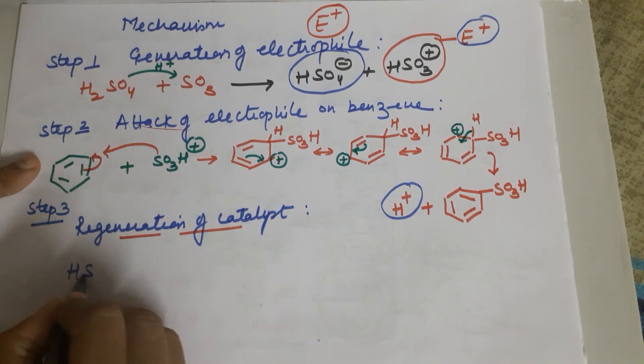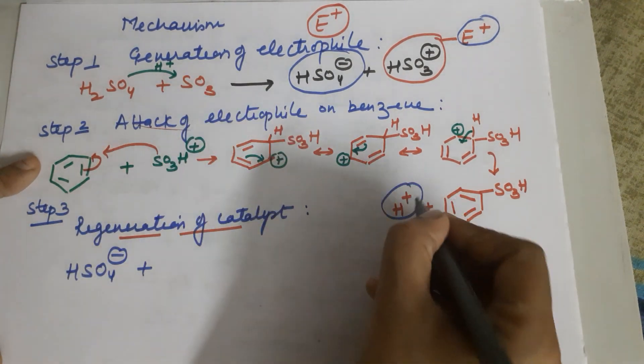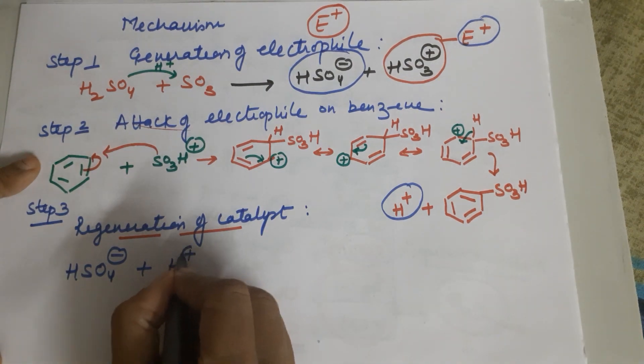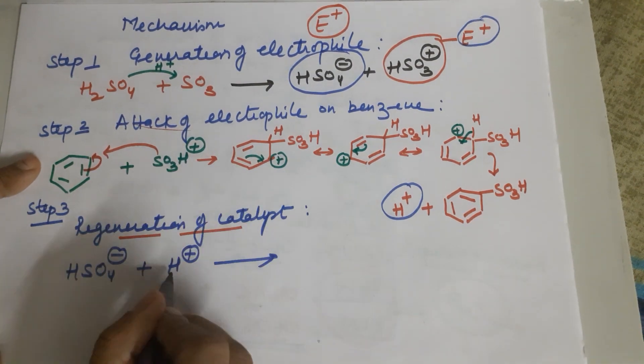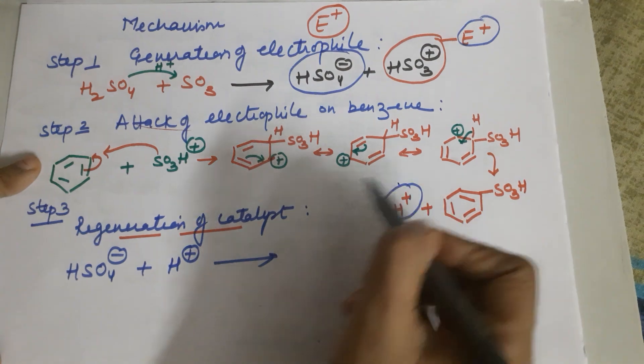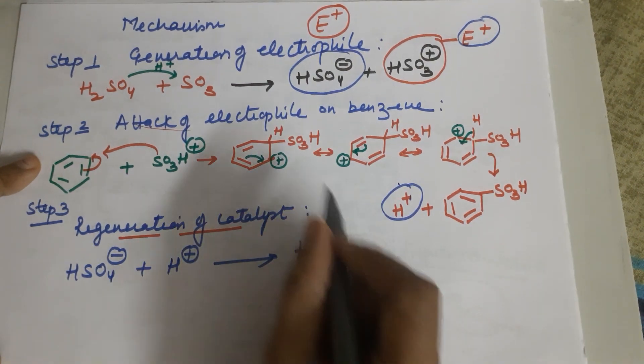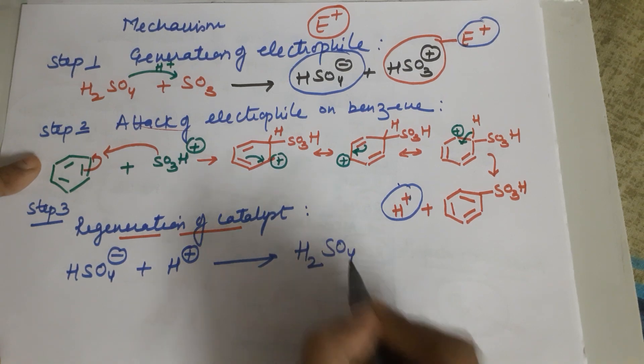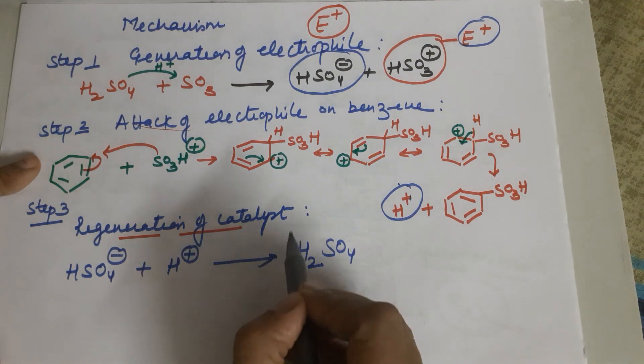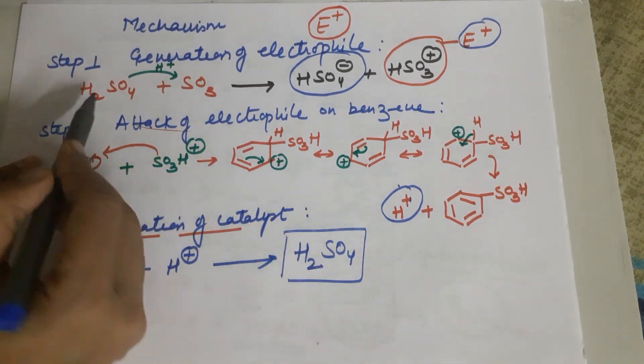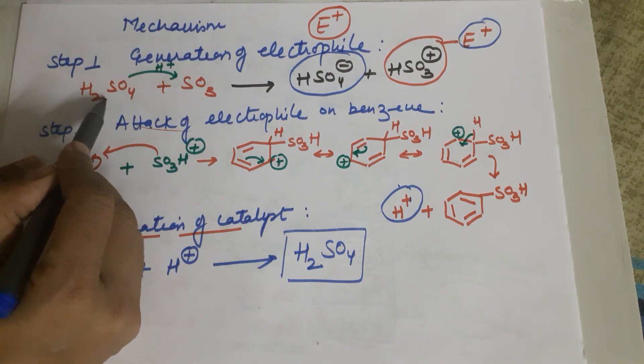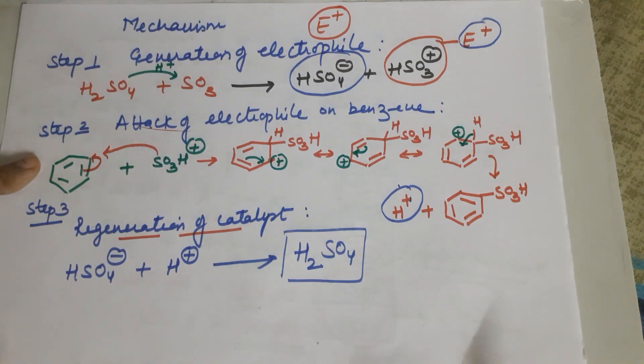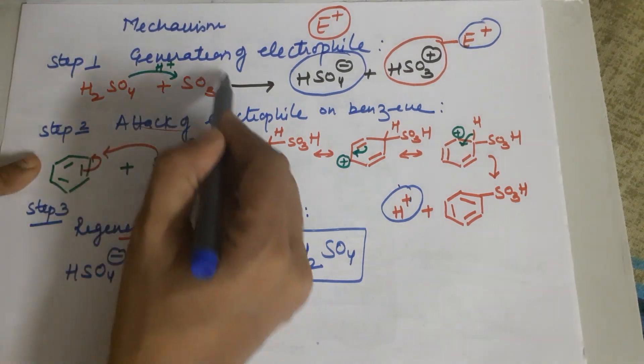Now the third step. In the first step you have HSO4-. In the second step you have H+ released. And finally these two will react because positive and negative attract each other, leading to the formation of sulfuric acid. So this is being regenerated.